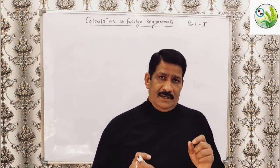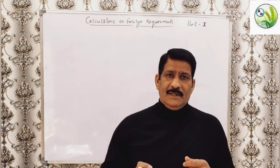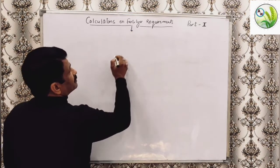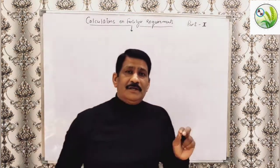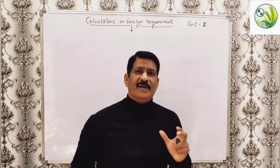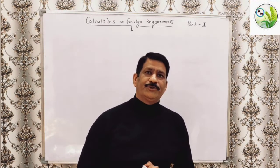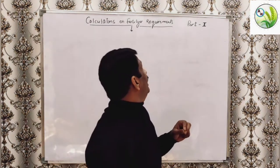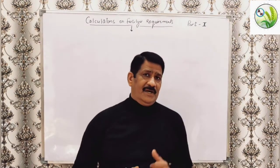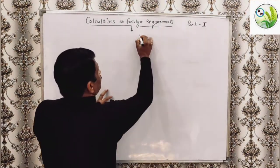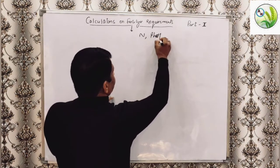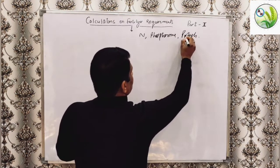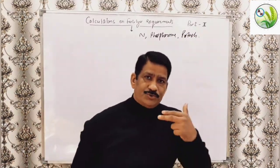Before going directly to the calculations, let me give you certain points with regard to the calculation of fertilizers. Firstly, what are fertilizers? Fertilizers are basically inorganic chemical substances which supply one or more of the essential plant nutrients to the plants for proper growth and ultimately enhance their productivity. These fertilizers mostly contain the essential plant nutrients like nitrogen, phosphorus, and potash.